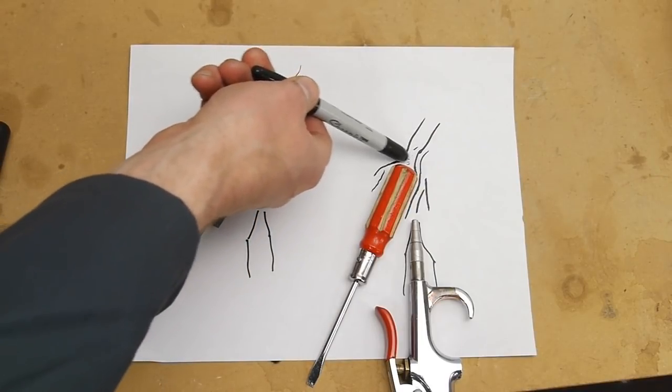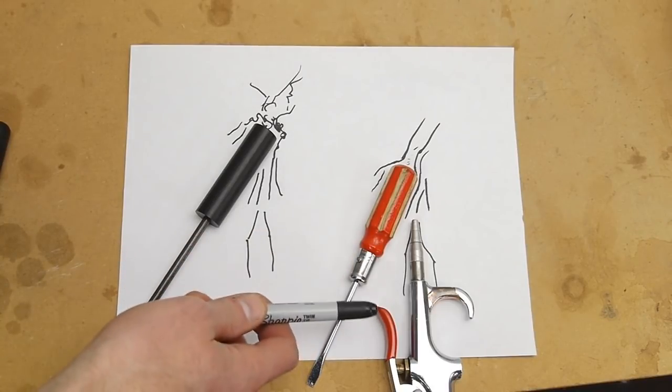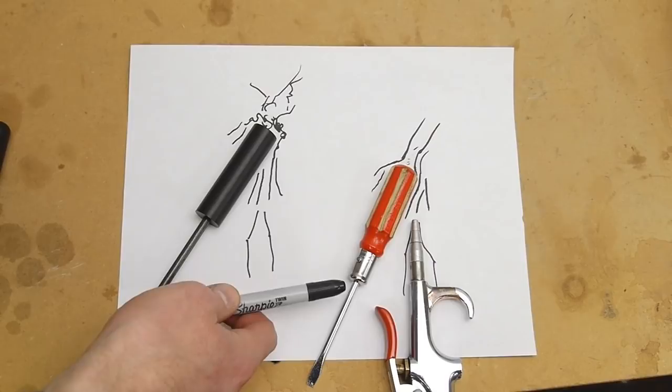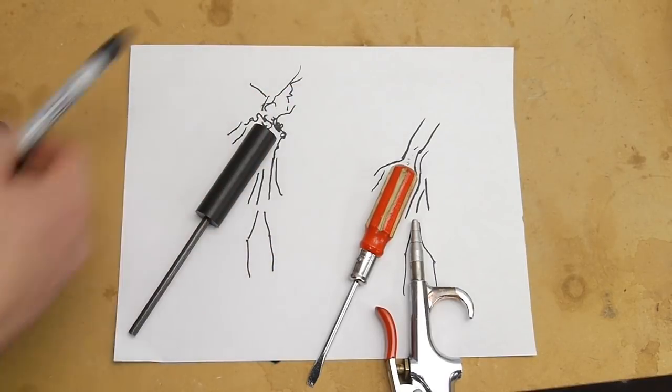And in this region here there's a low pressure zone and that's actually what holds the screwdriver up. So we've got gravity tugging down on the screwdriver's center of gravity and then we've got this lift force generated by the low pressure zone behind the handle.